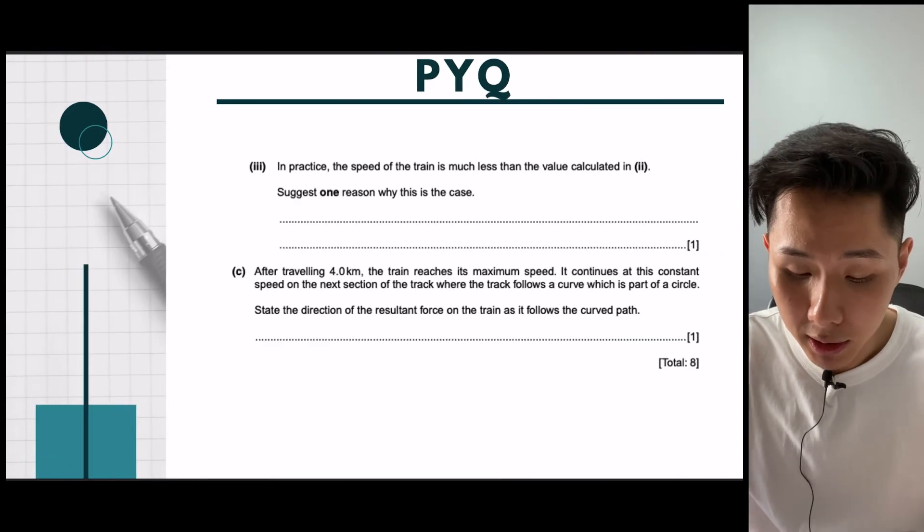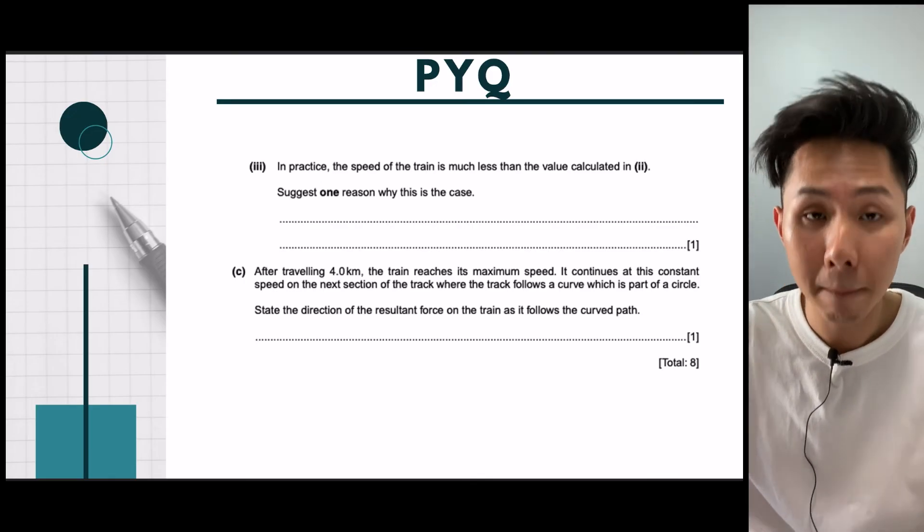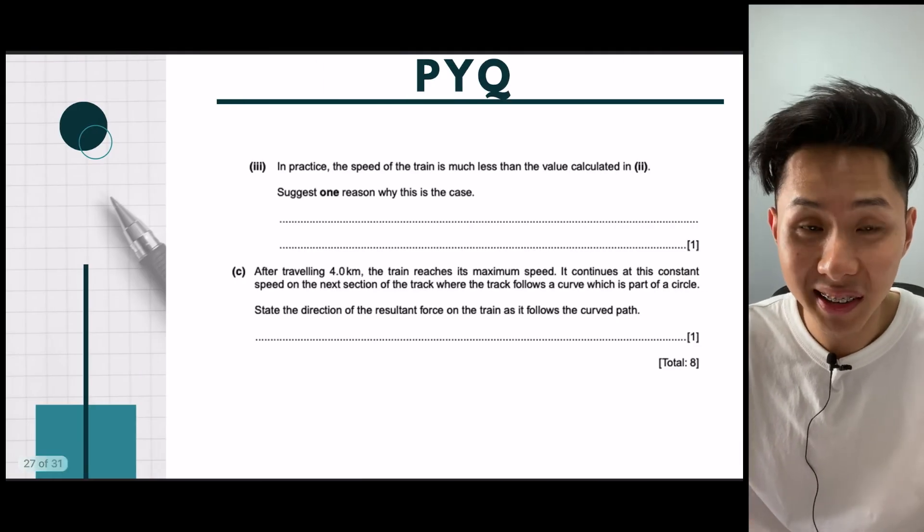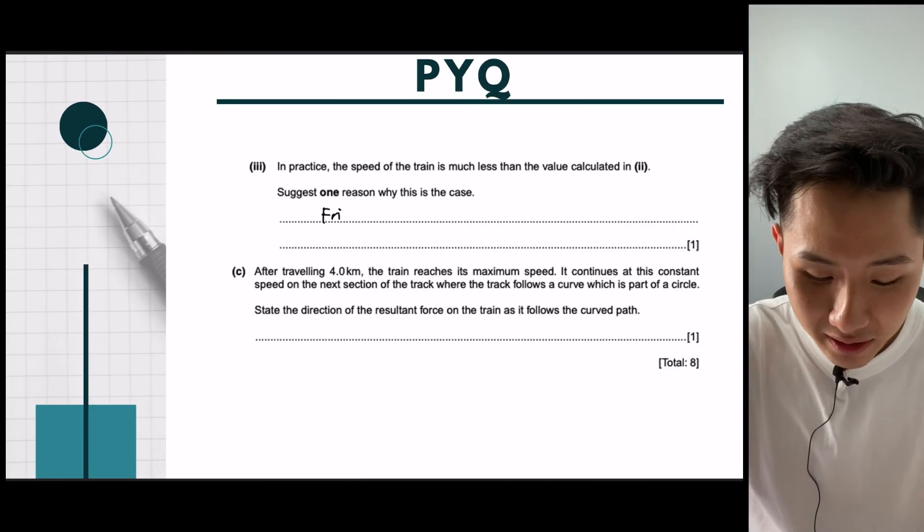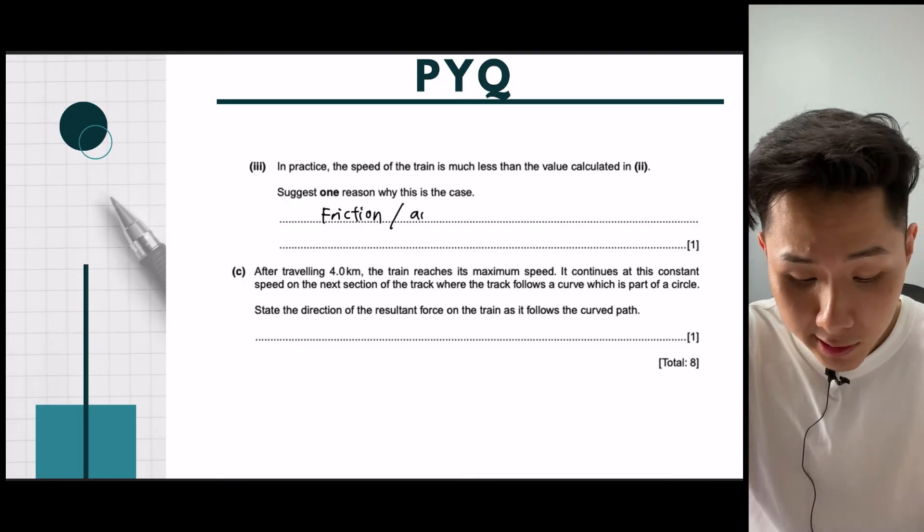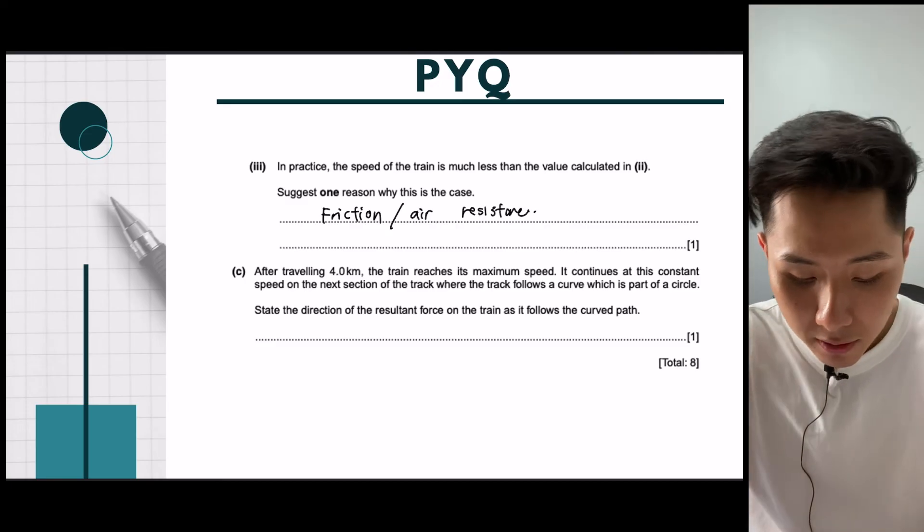So let's move on. In practice, the speed of the train is much less than the value calculated. So just one reason why is that. We know that this is the amount of work that is done, but some of it will be lost to friction. So we can say due to friction, some of the work done is due to overcome air resistance, drag, and so on.